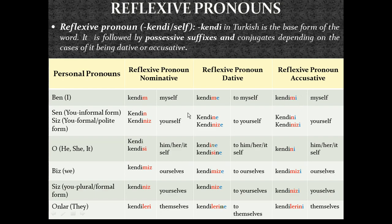For the second person singular in informal form, it is kendin. Remember the possessive suffix for second person singular was 'in/ın/un/ün', so since kendi ends with a vowel, I drop the vowel letter of the possessive suffix and just use the 'n' letter. For the polite form it is kendiniz, which translates as 'yourself' in nominative form. In dative form, kendin becomes kendine and kendiniz becomes kendinize — meaning 'to yourself, at yourself, with yourself'. In accusative case: kendini, kendinizi.